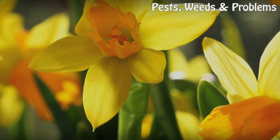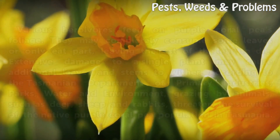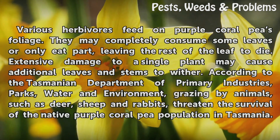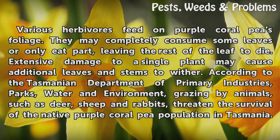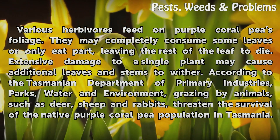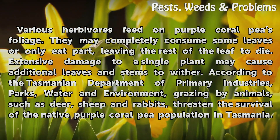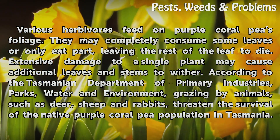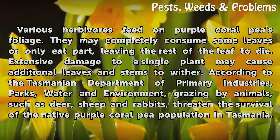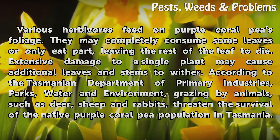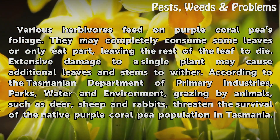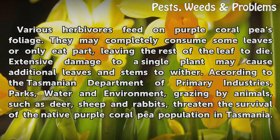Animals. Various herbivores feed on purple coral pea foliage. They may completely consume some leaves or only eat part, leaving the rest of the leaf to die. Extensive damage to a single plant may cause additional leaves and stems to wither.